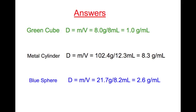Here are the answers. The green cube has density of 1.0 grams per milliliter. The metal cylinder has density of 8.3 grams per milliliter. The blue sphere has density of 2.6 grams per milliliter.